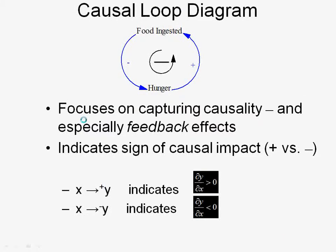So now we're going to talk about causal diagrams. Causal diagrams focus on capturing causality of a system in a qualitative fashion, particularly feedback effects. When drawing these diagrams, we link up variables — A links to B — and it's out of those links that broader structures like feedbacks are assembled. There's a polarity associated with each link. Polarity indicates the causal impact.